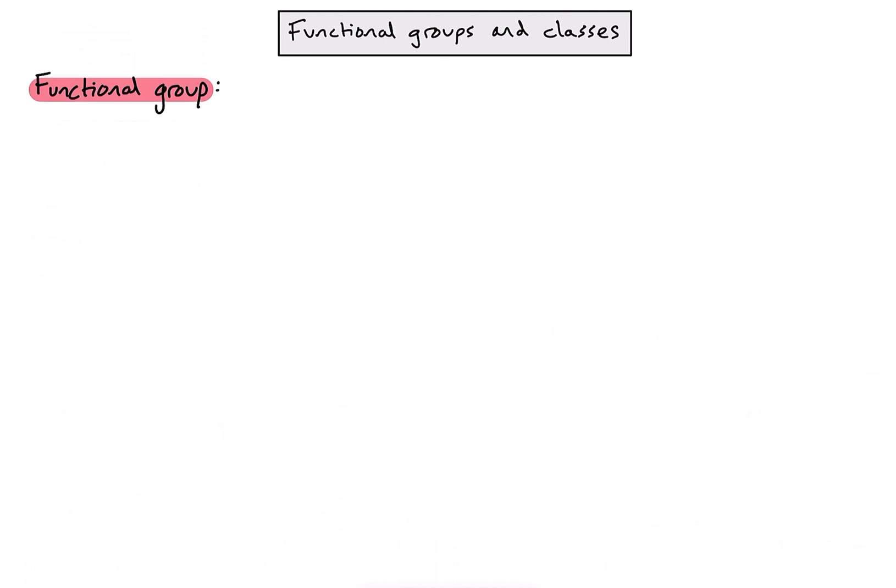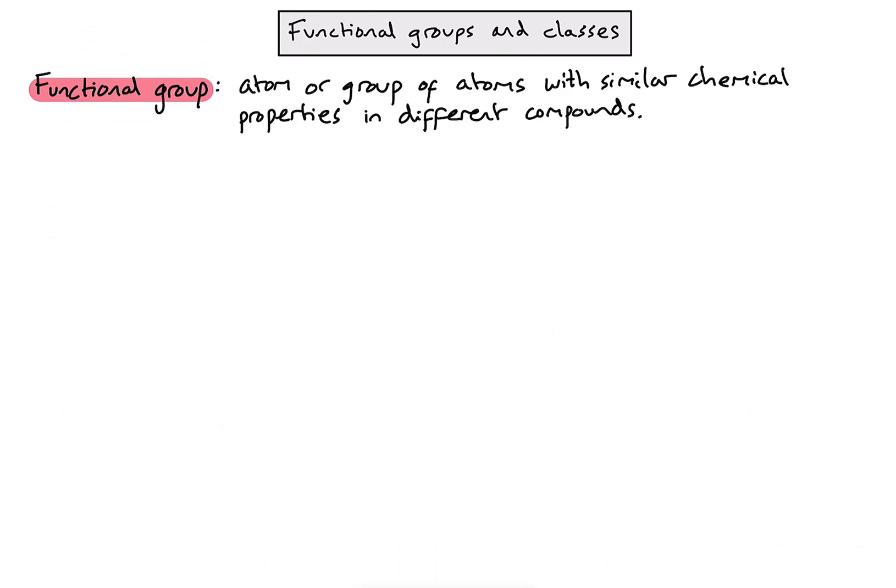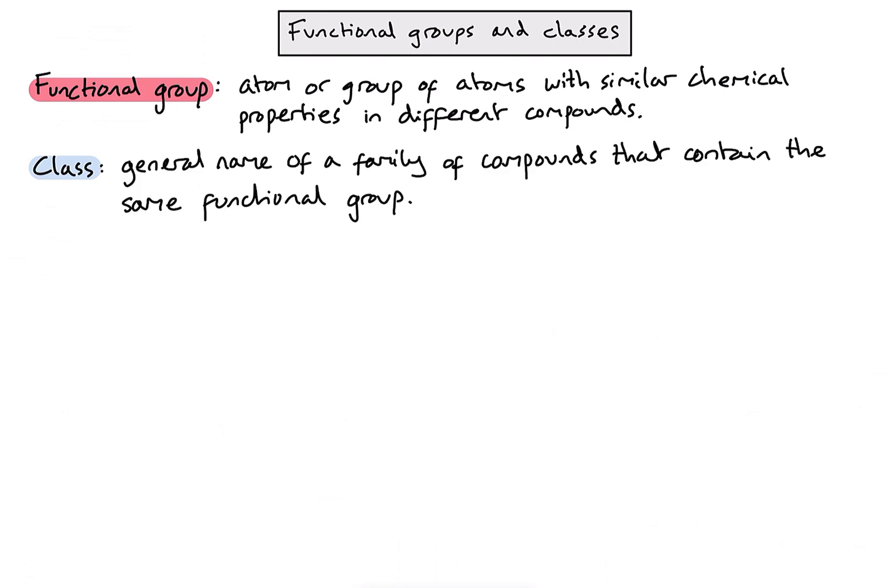Let's have a look at functional groups and classes. The first thing we're going to want to do is just distinguish between those two terms. A functional group is simply an atom or a group of atoms that have similar chemical properties in different compounds. A class is simply the general name for a family of compounds that contain the same functional group. So if we can spot the functional group in a particular molecule, then we can identify which class that molecule belongs to.